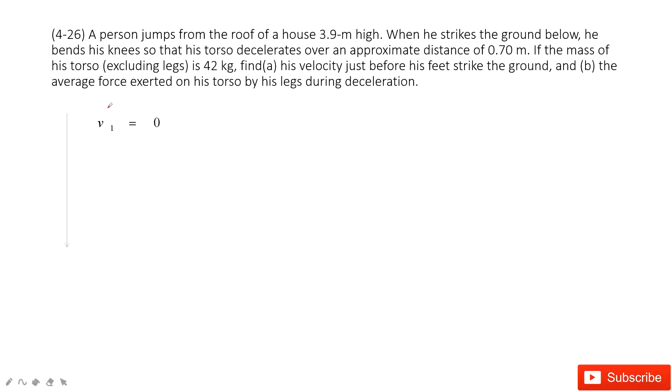So first part is the free-fall body. At the initial, velocity is 0, and then this person falls down on the ground. When he just reaches ground, we see this velocity is v_2.